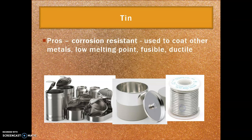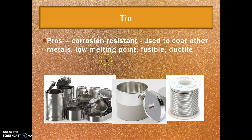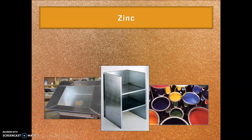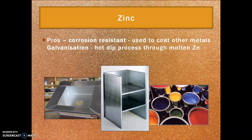Our last two are tin and zinc, which share a lot of similarities. Tin is corrosion resistant and is basically used to coat other metals. Food cans are made of steel, but if left uncoated the food would go off as the steel rusts — that's why they are covered in tin and known as 'tins.' Tin also has a very low melting point and is fusible, making it great for coating. Its ductility also makes it great for alloying with lead to use as solder, which we use in electronics at school.